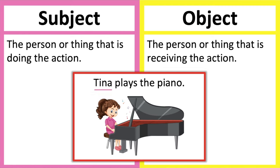In this example, the subject is Tina because she does the action of playing the piano. The object is the piano because it's being acted upon. So in summary, the subject is the person or thing that's doing the action, and the object is the person or thing that's receiving the action.